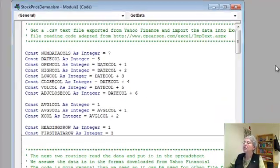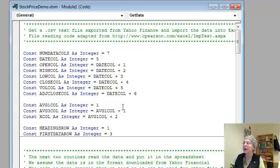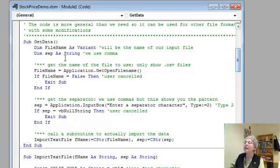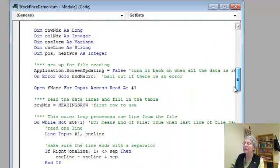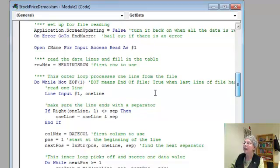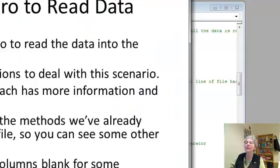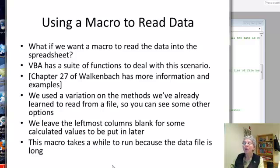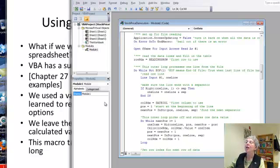And let me just show you. This is called the stock price demo, and it's posted with your materials. And here's our subroutine to get the data, and it calls its own subroutine to actually import the text file using line input. I'll say more about that in a minute. What we did was to actually read in the data and leave some of the columns blank for calculated values to be put in later. And another comment, this macro takes a while to run because the data file is quite big.